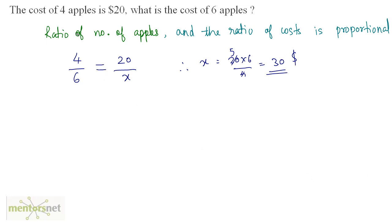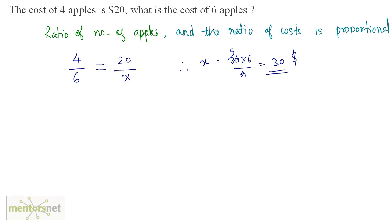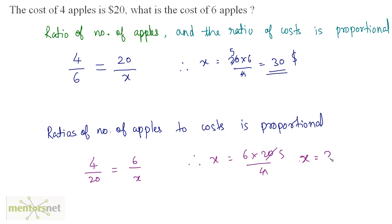We can also set it up as the ratio of number of apples to cost proportionate to another ratio of number of apples to cost. So 4 by 20 is proportionate to 6 by x. Therefore x equals 6 times 20 by 4, giving x equals $30 again. This is how you solve questions related to proportion.